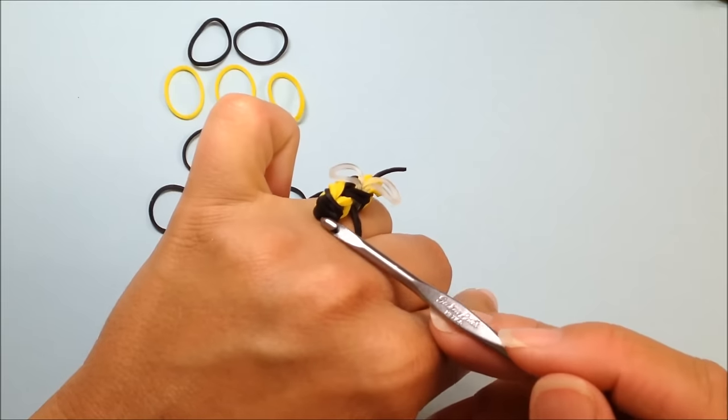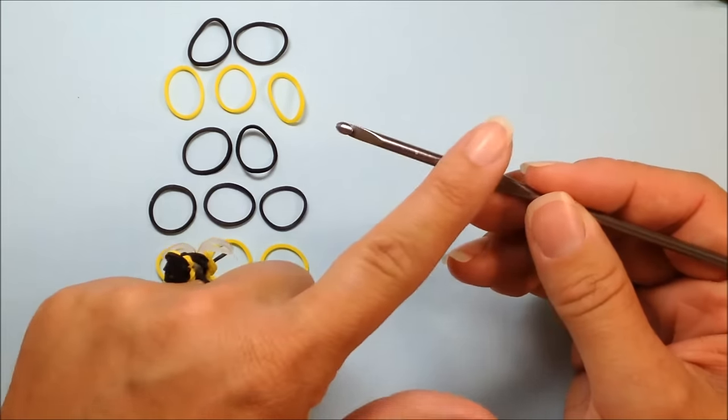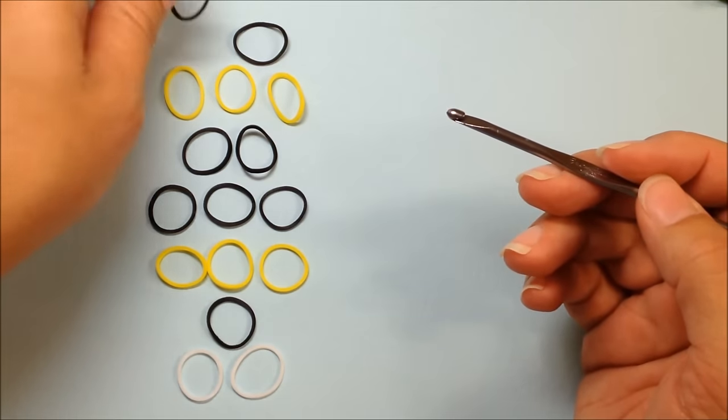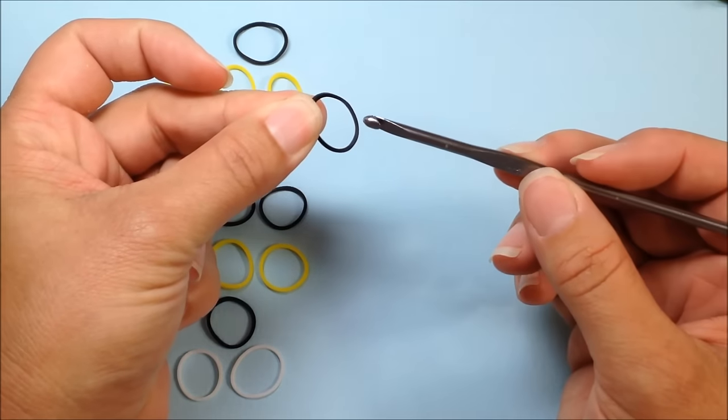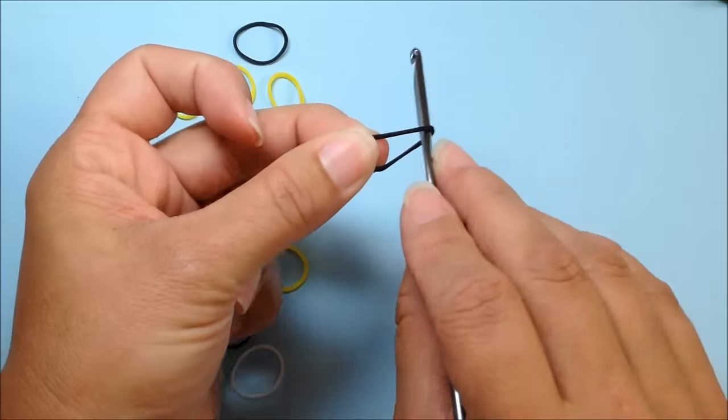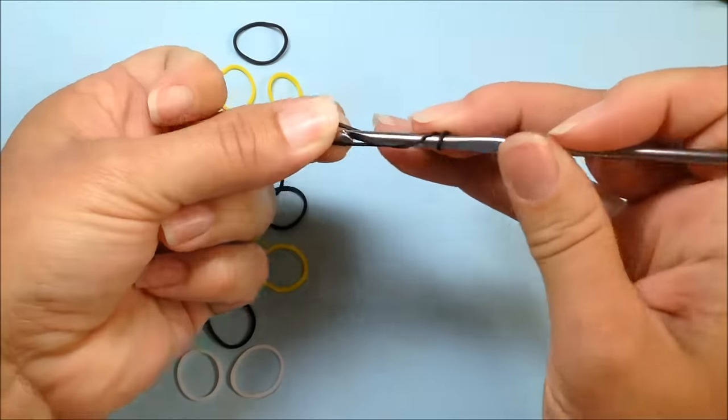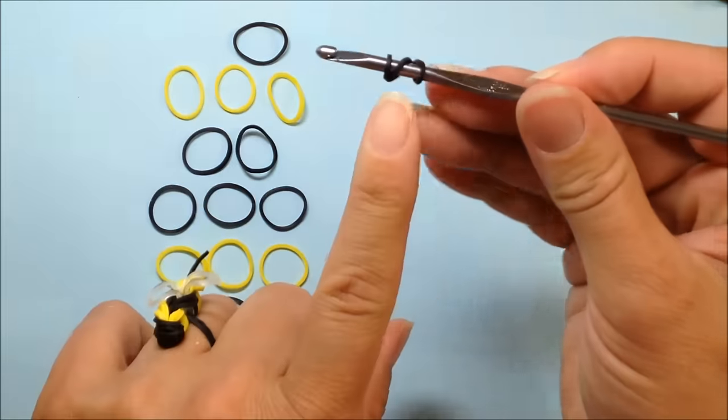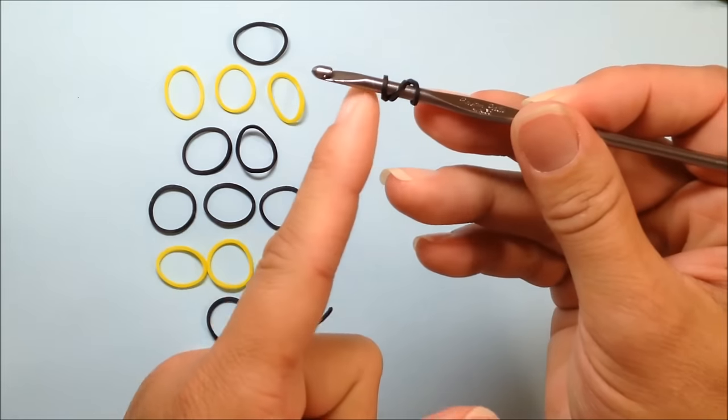We're going to start with his little bum area. You're going to take your hook, a single black band, and you're going to wrap it around your hook three times. One, two, and three. So it appears that there are three bands on your hook.